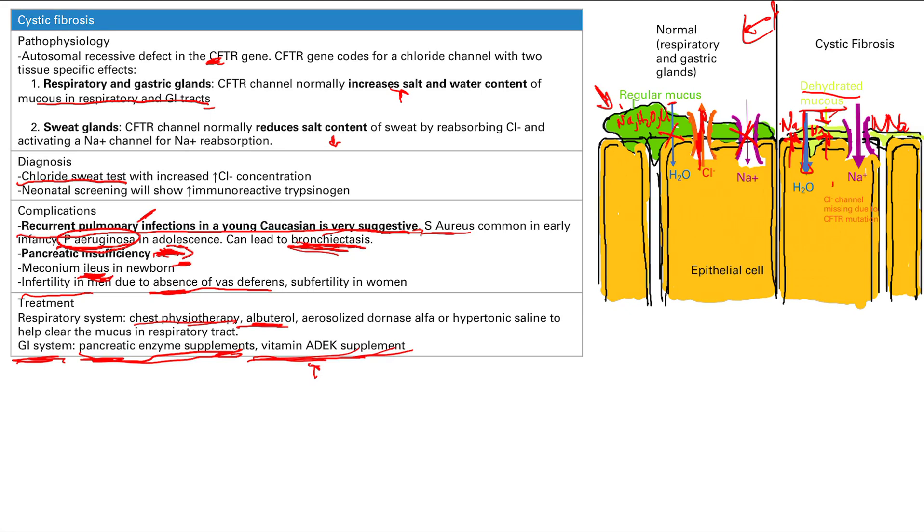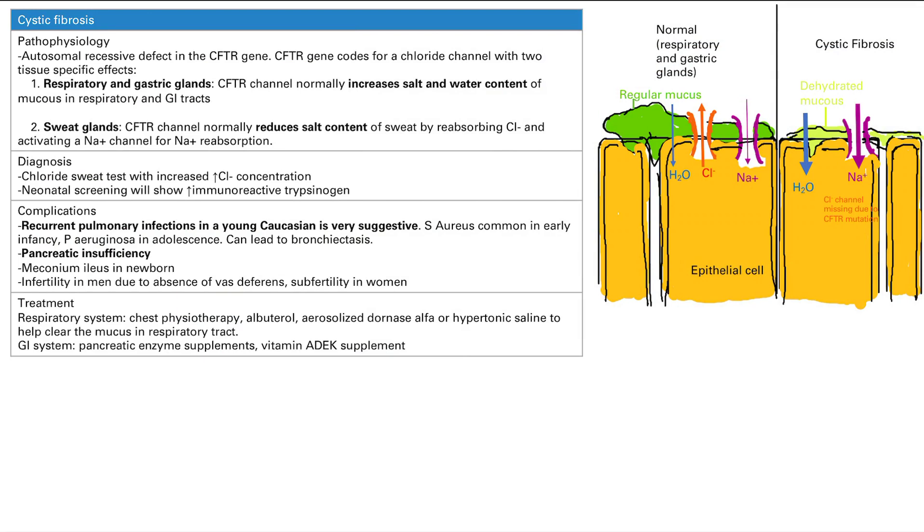So that's it for cystic fibrosis. The key here is that CFTR gene coding for that chloride channel with two tissue specific effects. Make sure you know these tissue specific effects. Make sure you know what it does normally, and obviously if you know what it does normally, then you know what it does when it's abnormal—when it's missing, when it's not working. When it's not working, you get cystic fibrosis. Complications are recurrent pulmonary infections in young Caucasians, you get GI symptoms, pancreatic insufficiency, meconium ileus. Pulmonary, GI, you see that over and over again. Last thing is the infertility in men from absence of the vas deferens. You get subfertility in women. That's it for cystic fibrosis.